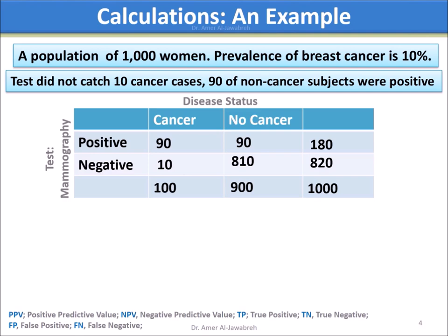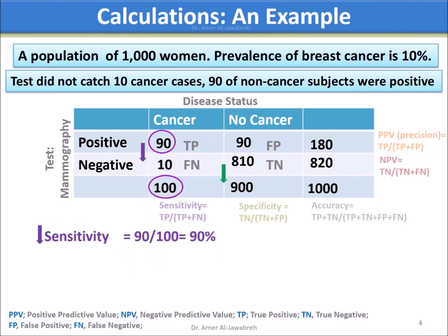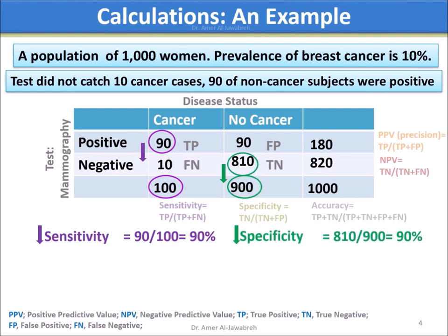After constructing the 2x2 table, let's start the calculations. For sensitivity and specificity, look vertically at the columns: the cancer column for sensitivity, which is 90 over 100; and the no-cancer column for specificity, which is 810 over 900.